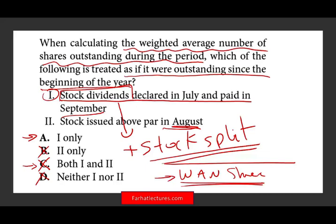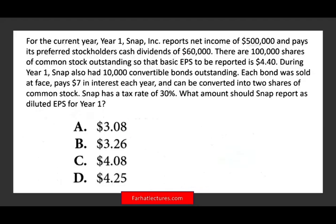Here's what you need to know: both stock dividends and stock splits are considered outstanding as of the beginning of the year if they occur during the year. Make sure you know this rule. For computational problems involving the weighted average number of shares with stock dividends or stock splits, visit my website for detailed examples and exercises.